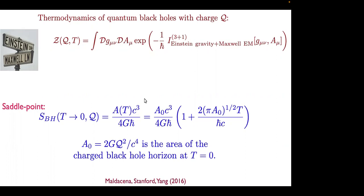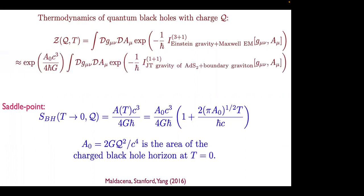That theory has more than just the metric, because some metric components in higher dimensions become the metric in the lower dimension, and other components become scalar fields. In the end you get one scalar field and a theory called JT gravity. This is the purely gravitational calculation — nothing new here that wasn't known a long time ago. It is performing the dimensional reduction from three-plus-one to one-plus-one.